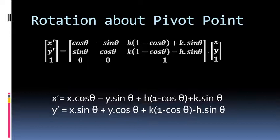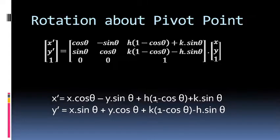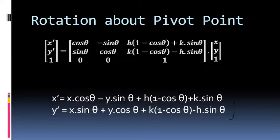This composite operation gives us the new location of any point after rotation. The original location of the point is the input, and applying the composite matrix gives the transformed point. Expanding this in equation form by multiplying and comparing corresponding elements: x' = x cosθ − y sinθ + h(1−cosθ) + k sinθ, and similarly y' = x sinθ + y cosθ + k(1−cosθ) − h sinθ. These are the equations for the composite transformation — rotation about a given pivot point.